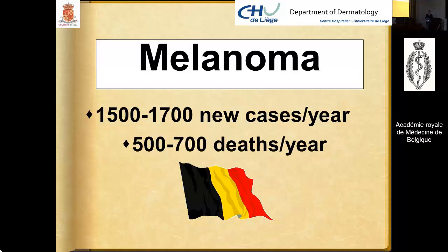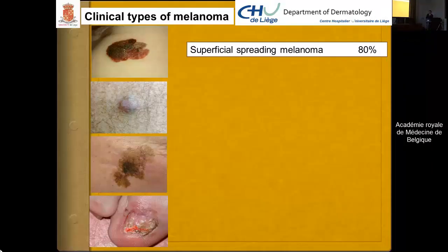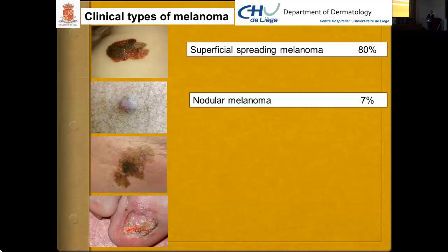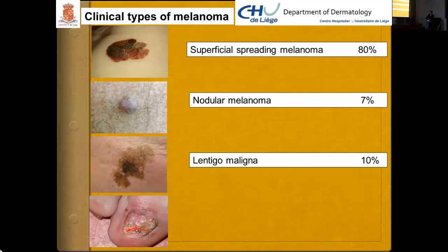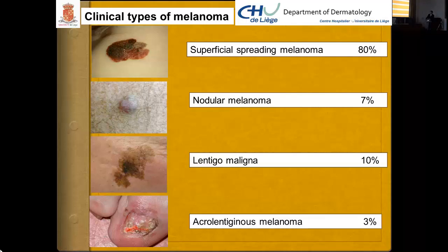There are several types of malignant melanoma. The first is superficial spreading melanoma, fortunately not the most dangerous, accounting for about 80% of cases. Then we have nodular melanoma, much more dangerous and accounting for about 7% of cases. Then lentigo maligna, about 10% of cases. And perhaps the most dangerous, acral lentiginous melanoma — rare but very dangerous.